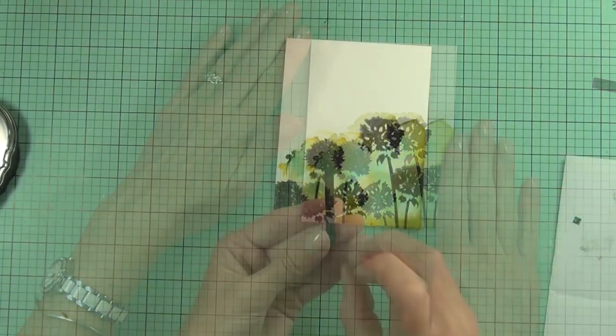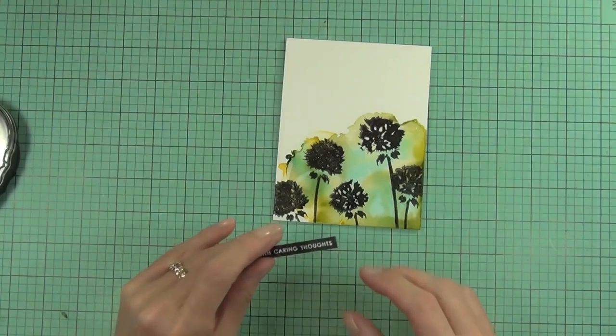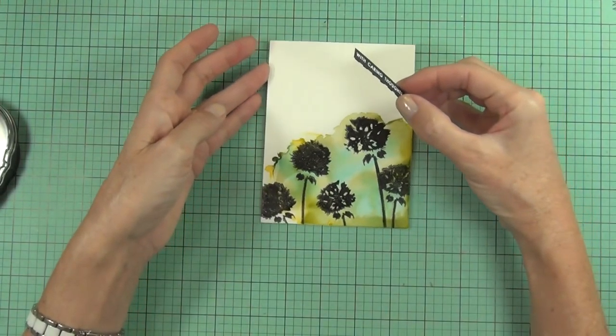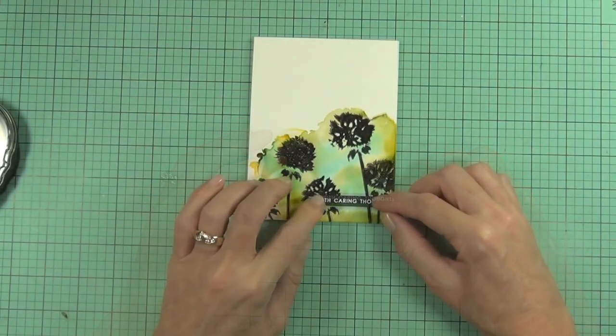And just tap that over top so most of that ink is either gone or dry now. I was very gentle when I did that, and I would definitely set this aside overnight to make sure that that permanent ink dries perfectly because I did do it quite quickly.